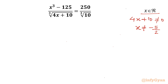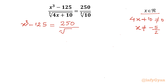Now we can cross-multiply to get: x³ - 125 = (250 / ∛10) · ∛(4x + 10).